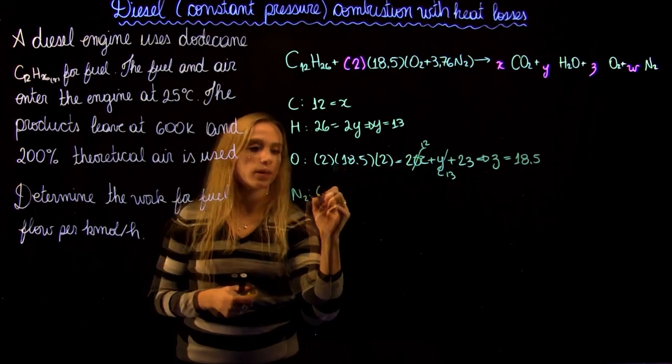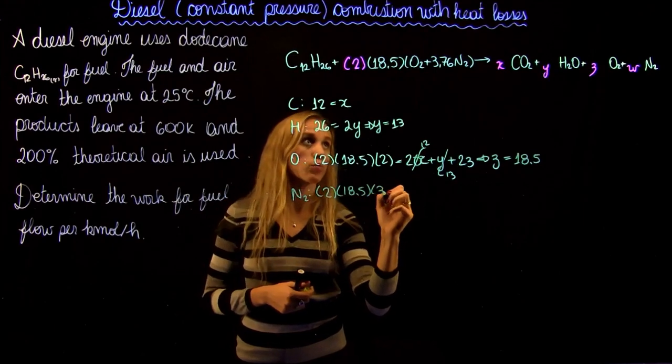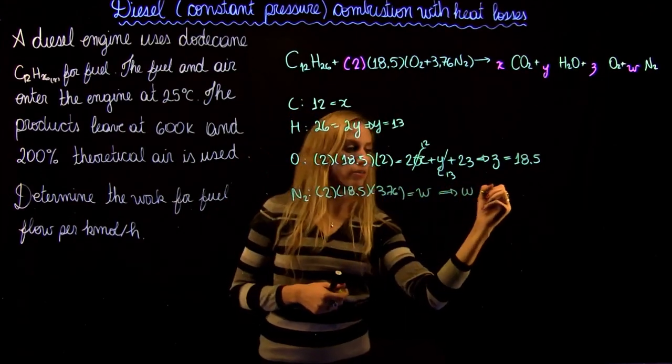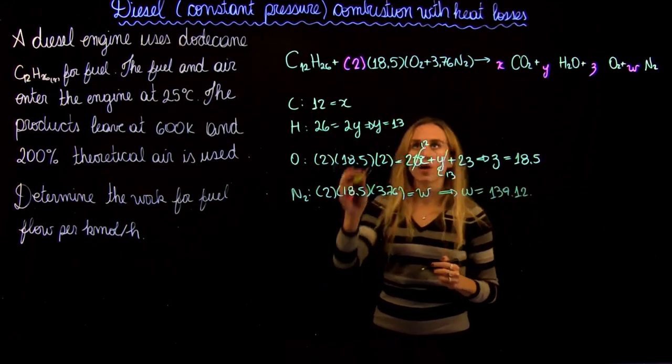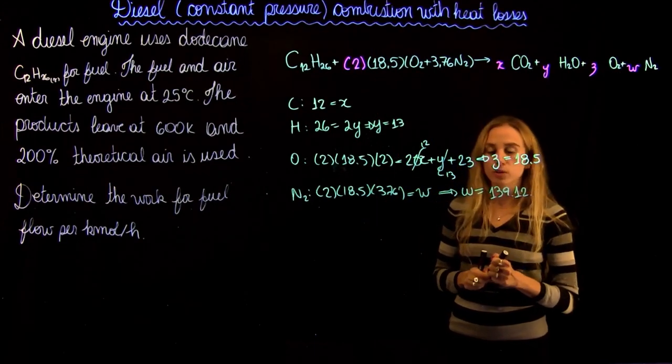And now for nitrogen, we're going to have 2 times 18.5 times 3.76 equals 2w, and we're going to find the value of w of 139.12. If you're not sure how we got the 18.5, just go back to the previous video and follow the steps.